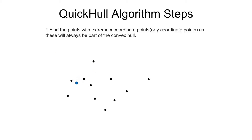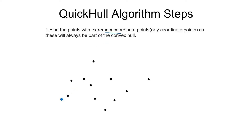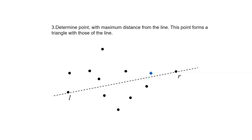Let us start discussing the Quick Hull algorithm. The input to the Quick Hull algorithm is a set of points. From this picture, it's clear that extreme points will be part of the convex hull. Quick Hull uses the divide and conquer strategy — it finds the extreme points and divides the problem into subproblems. To begin, we find the extreme x-coordinate points: the leftmost point L and the rightmost point R, dividing the total space into two halves along the line joining L and R.